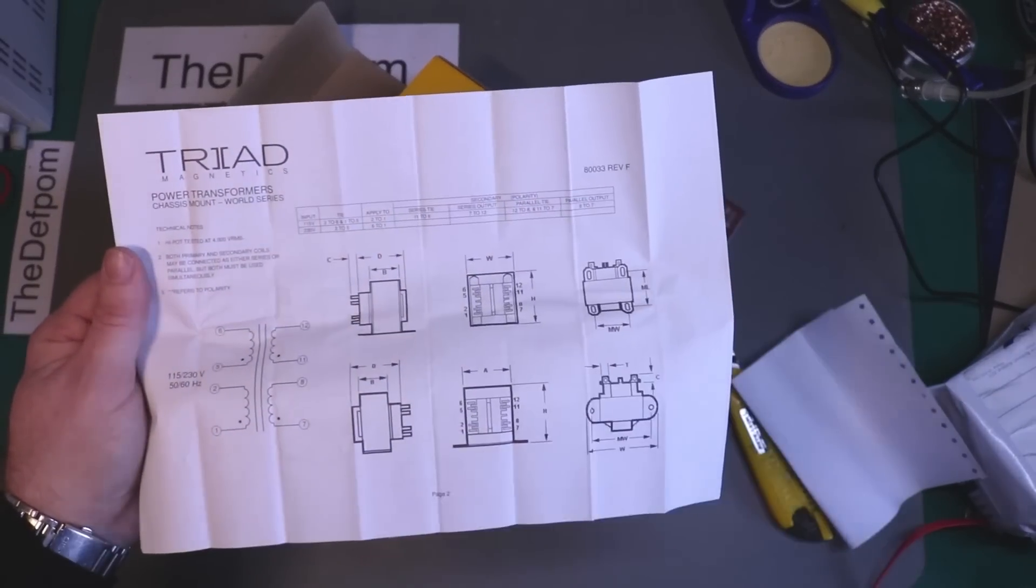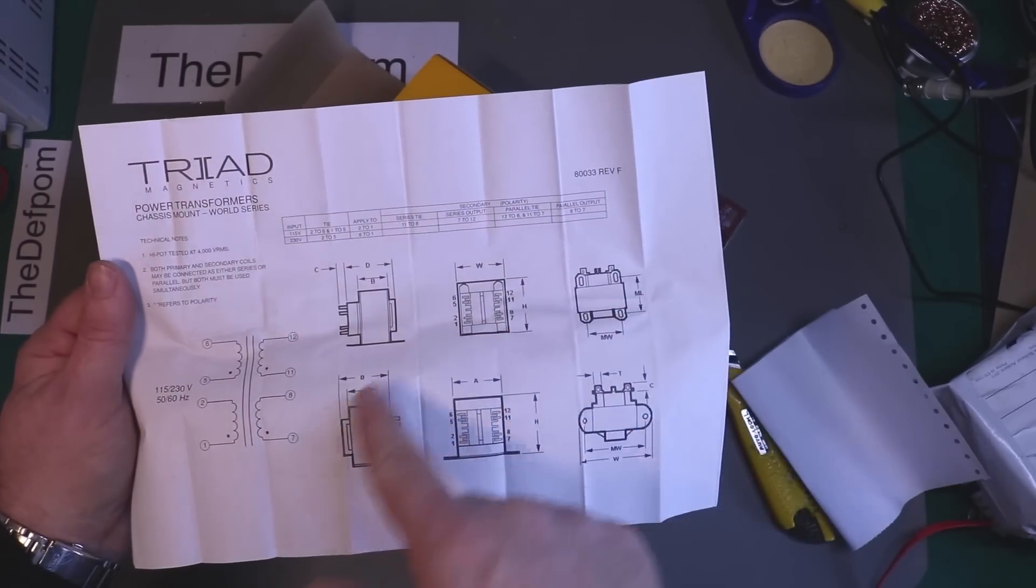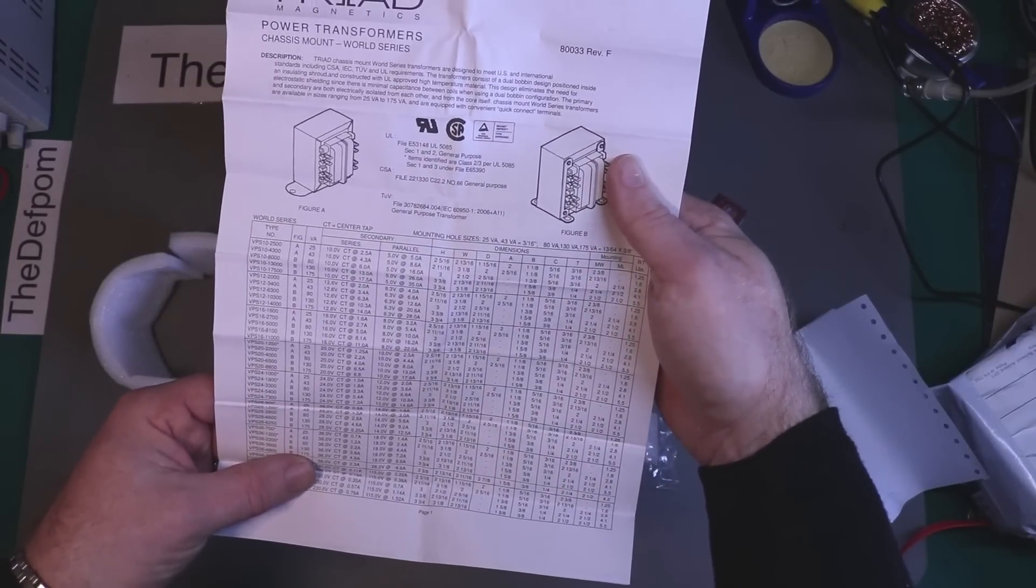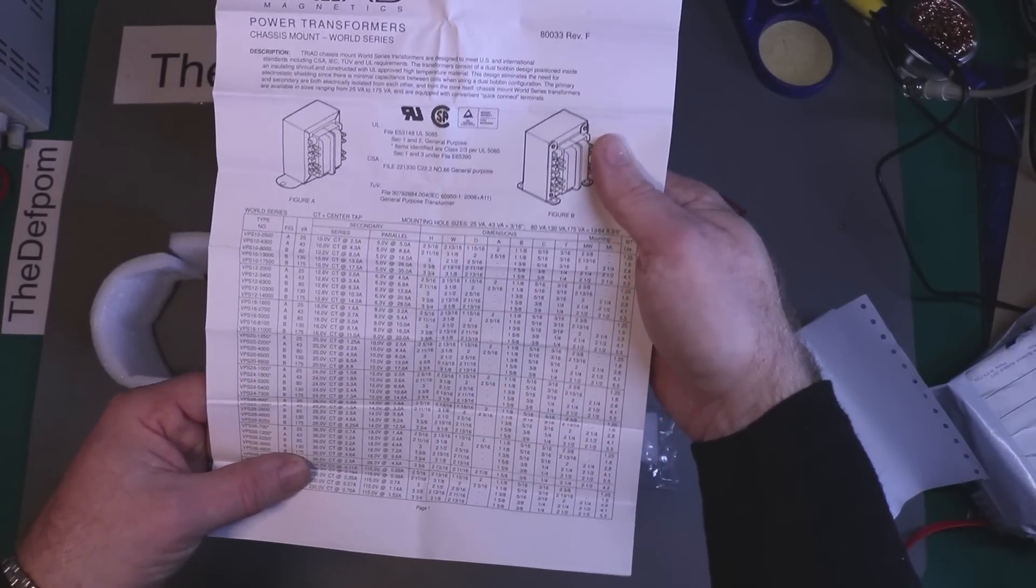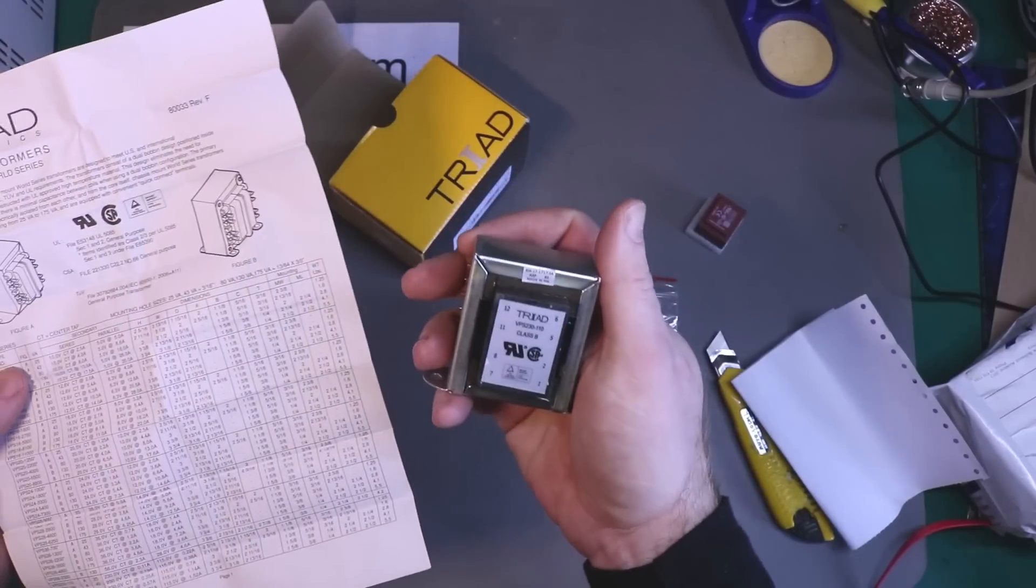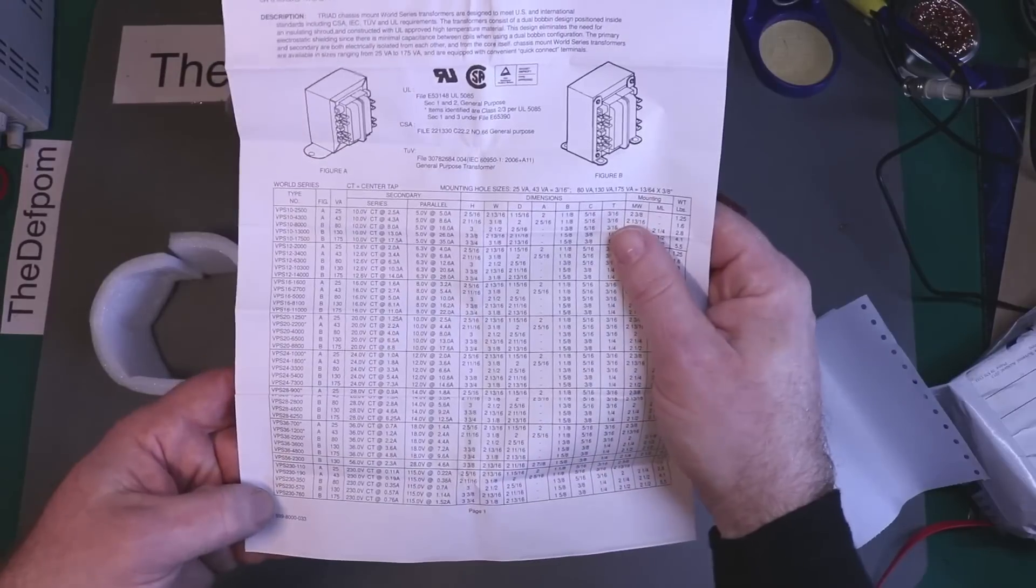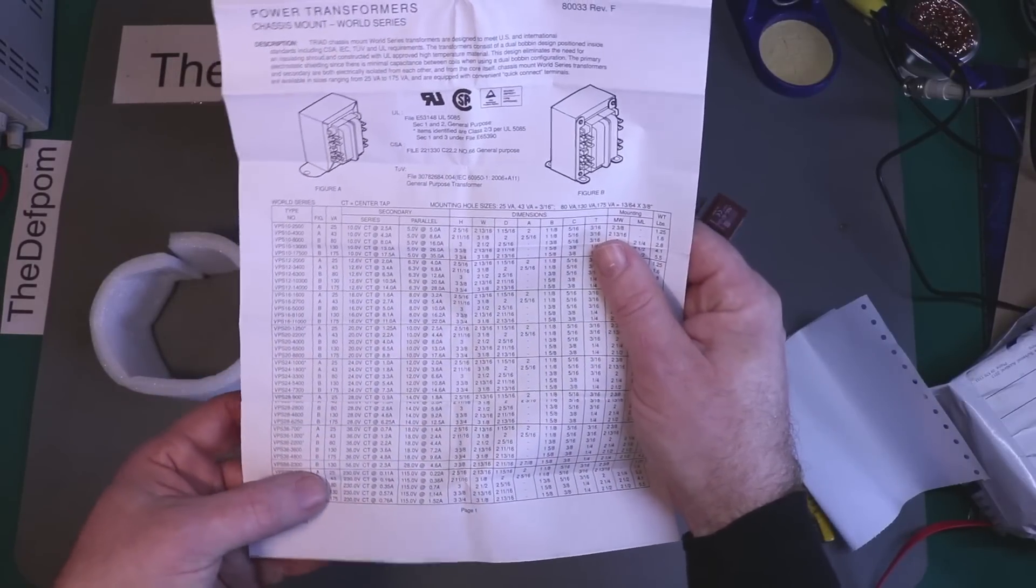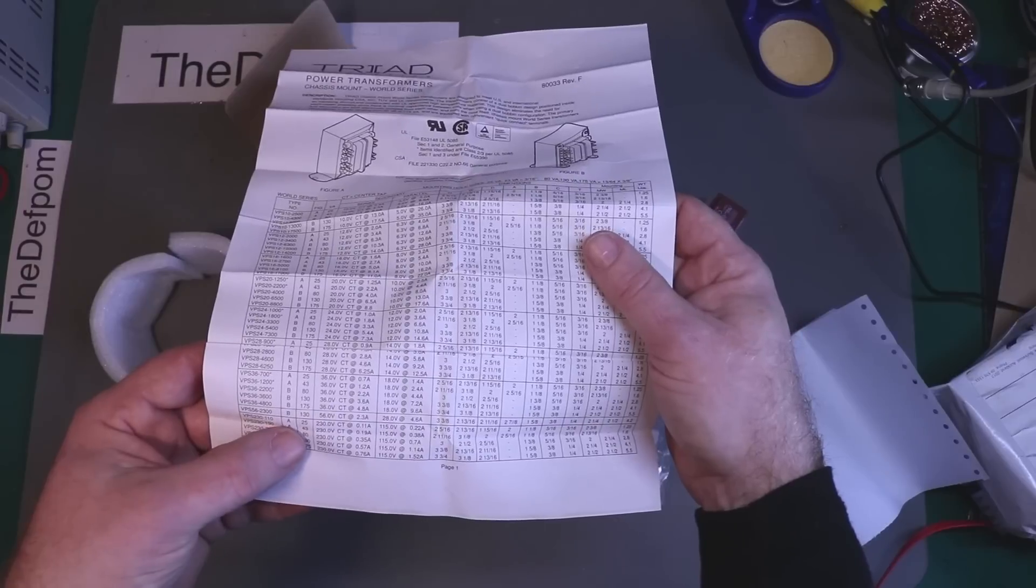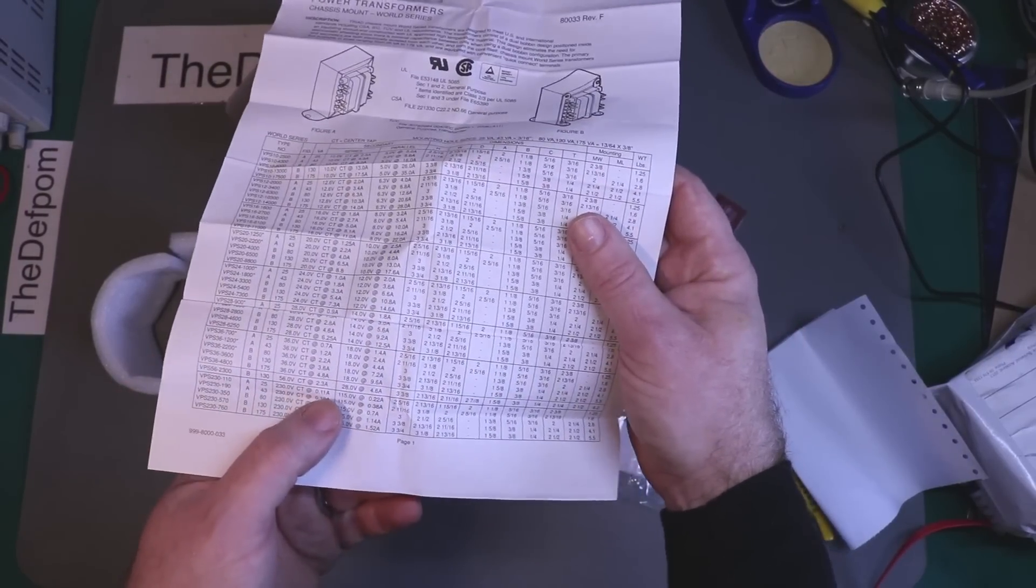So you can do different combinations. I just need to figure out which one it is. I've forgotten now. Which model is this one? 230-110. So 230V secondary, 110mA.